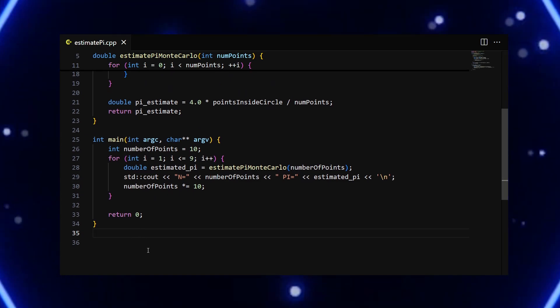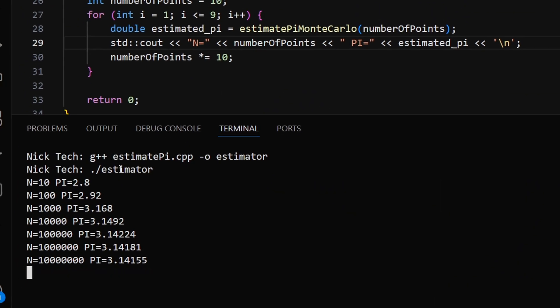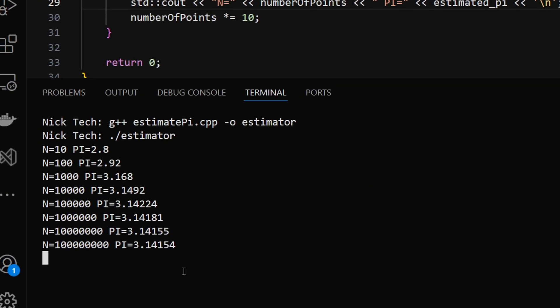I added main to call our function with different numbers of points to generate. Let's compile this code and see how the approximation performs. The more points we generate, the more precise the approximation becomes.